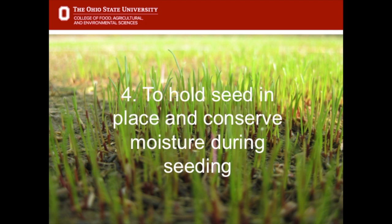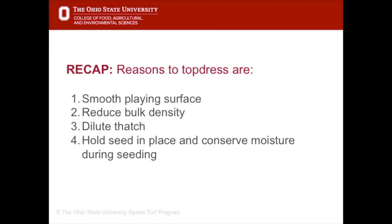The fourth reason top dressing is applied to turf is in conjunction with renovation. The combination of coring, seeding and top dressing provides much greater benefits than any one of those practices performed alone. The top dressing material covers the seed, helping to retain moisture and preventing seed movement. To recap, reasons to top dress are to smooth the playing surface, reduce bulk density, dilute thatch, hold seed in place and conserve moisture during seeding.